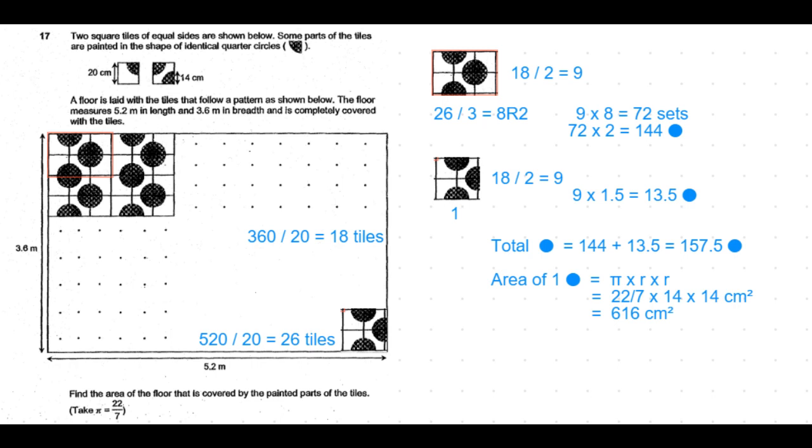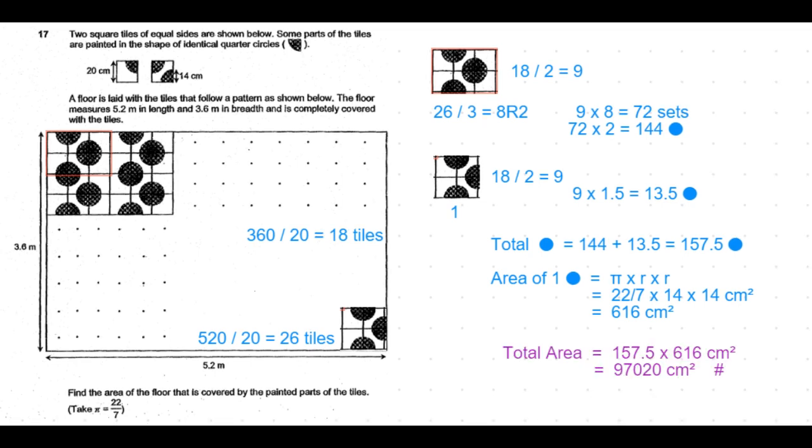To find out the total painted area, we already found out there are 157 and a half such circles. So 157.5 times 616, which is equal to 97,020 centimeters square. So this is the area that would be covered by the painted parts of the tile. So that's the answer for this question.